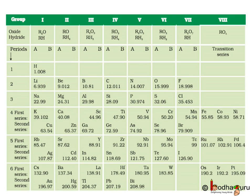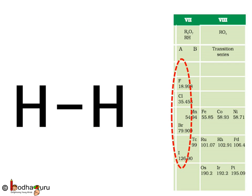But Mendeleev's table had a few shortcomings too. For example, hydrogen was placed with alkali elements based on its reaction with oxygen, sulphur, etc. Hydrogen produces compounds comparable to those produced by alkali metals in such reactions. But hydrogen is a diatomic gas, like chlorine and fluorine of group 7. So there was confusion with hydrogen's position in the table — he could not assign a correct position to hydrogen.